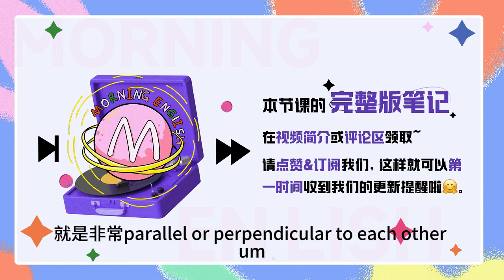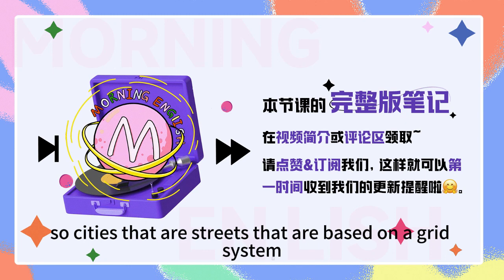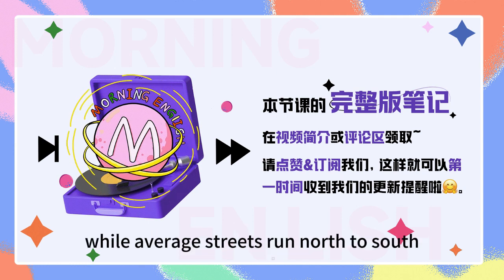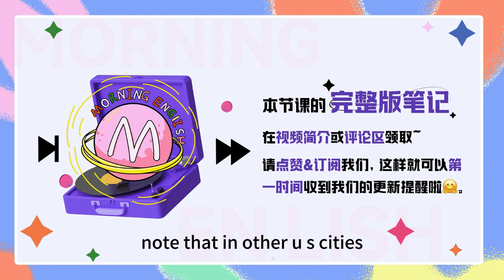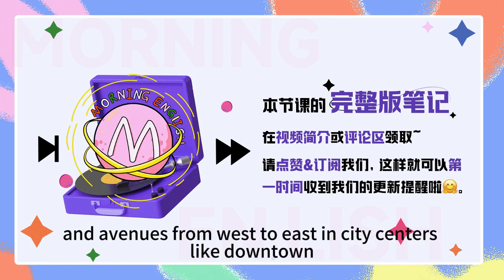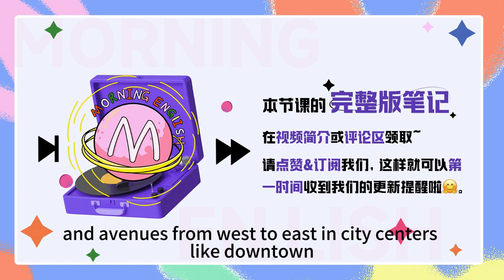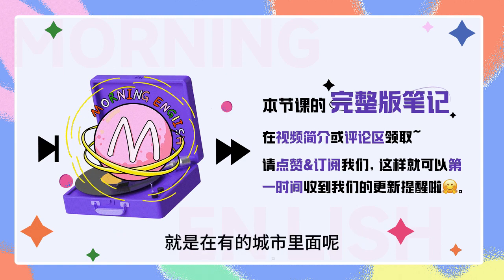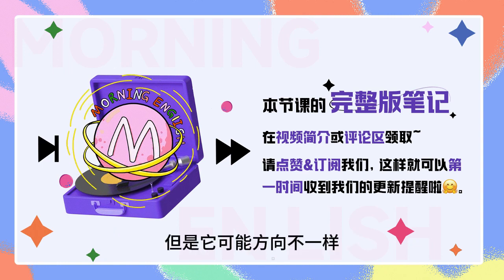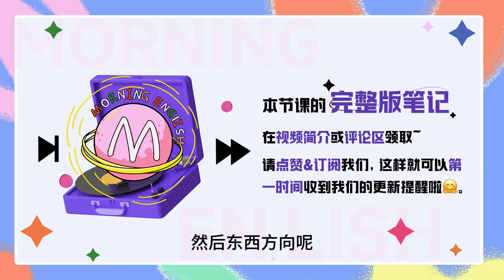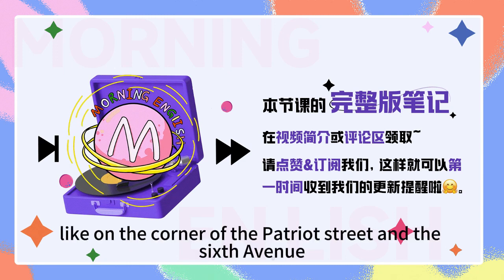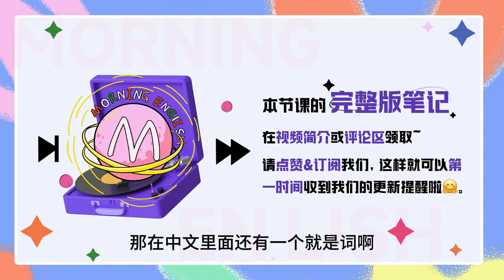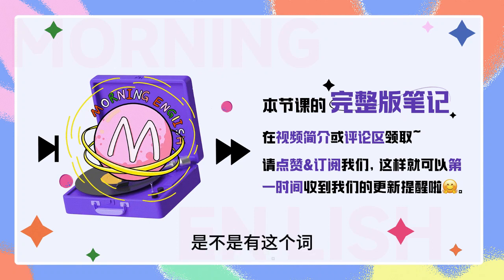Parallel or perpendicular to each other. So streets that are based on a grid system — streets and avenues are the same, with the difference that streets run from west to east, while avenues run north to south. Note that in other U.S. cities, this may be reversed. Thus, in city centers like downtown, you will almost never find two avenues that intersect. 所以在有的城市里面，streets和avenues的意思是相同的，但是方向不一样。比如说南北方向的叫做avenue，东西方向的叫做street。比如说 it's on the corner of Patriot Street and 6th Avenue. Perfect, you got it.